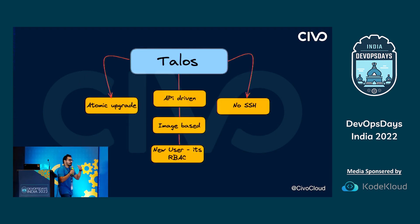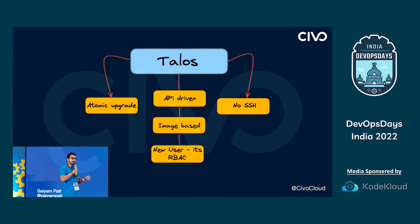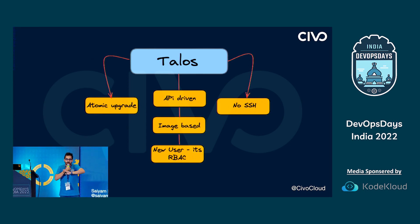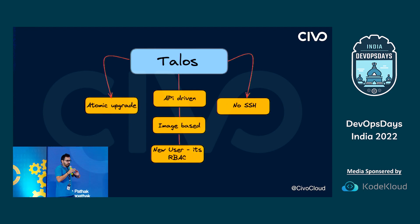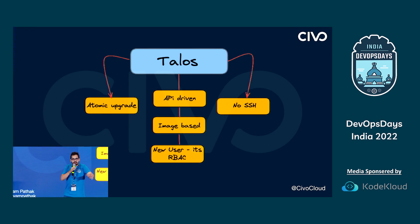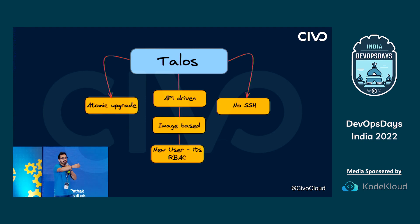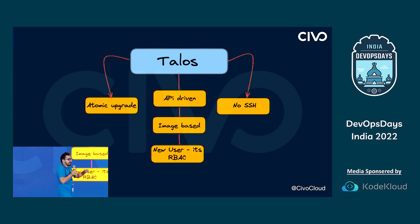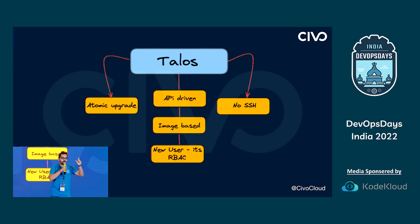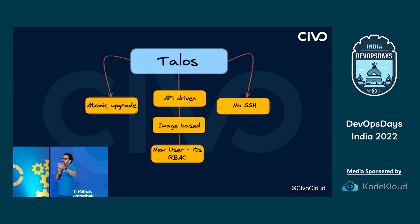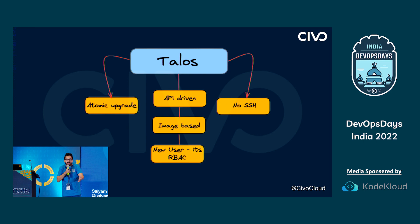That is where Talos comes in. Talos is an operating system built specifically for Kubernetes — its sole purpose is to give you a Kubernetes cluster, nothing else. You cannot SSH into a machine running Talos, which itself is a huge security benefit. What people usually do is create clusters with SSH access and then install tools to record sessions and see what went wrong. All of that is eliminated automatically when you have no SSH access.